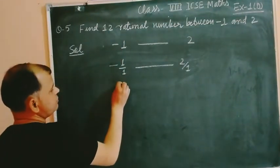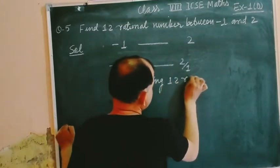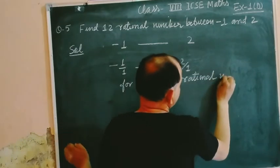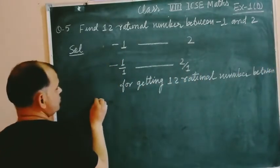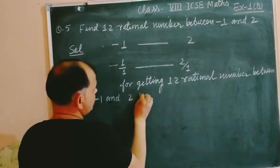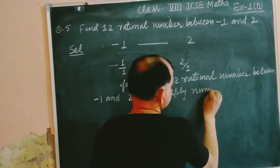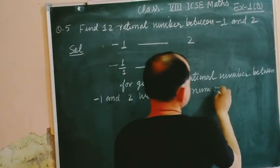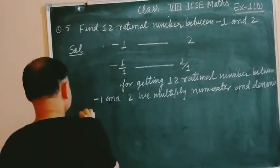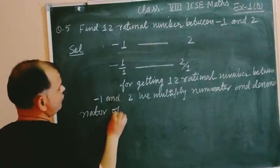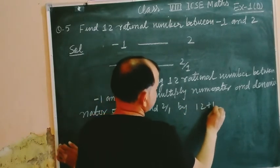Now we find how many rational numbers? 12 rational numbers between minus 1 and 2. So we multiply the numerator and denominator by 12 plus 1. 12 plus 1 is equal to 13.